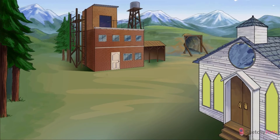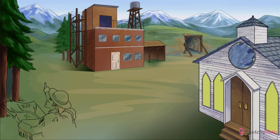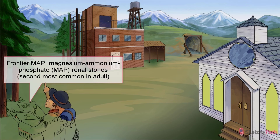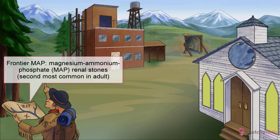Let's start with magnesium ammonium phosphate, or MAP stones. These are the second most common form of renal stones in adults, following calcium stones, encompassing roughly 15% of cases. In this scene, MAP stones will be symbolized on the map held by this frontierswoman, getting her bearings as she prepares to make her way back to the dig site.